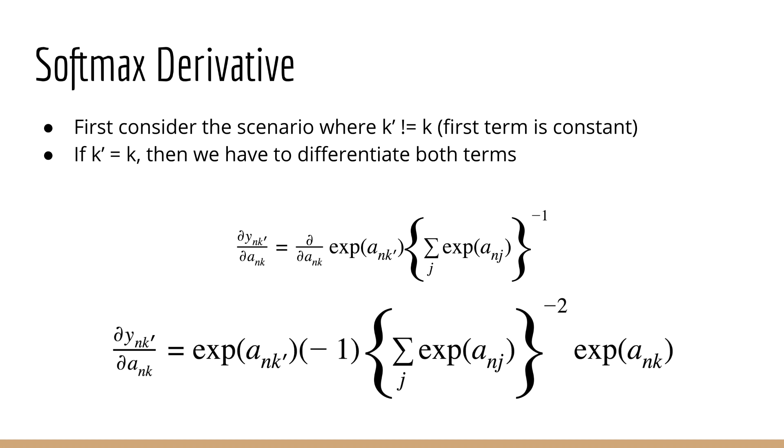Alright, so before we do anything, we have to first decide whether or not k prime is equal to k. Because if it is, then we have to differentiate the first term. If it's not, then the first term is constant with respect to k. For the purpose of this lecture, we'll first assume that k prime is not equal to k, so the first term is constant. So after differentiating, we get this. Remember that the derivative of the exponential is just itself. If you want to do this by hand on paper, you are most certainly encouraged to do so.